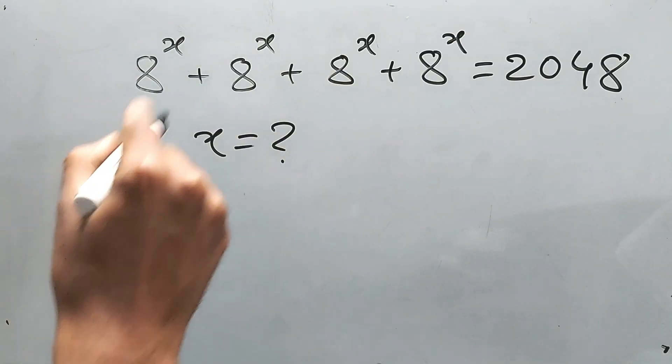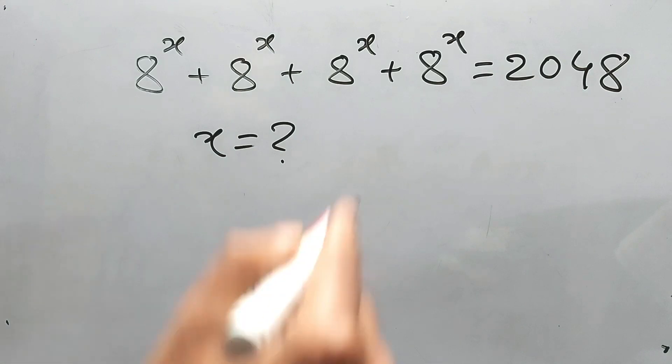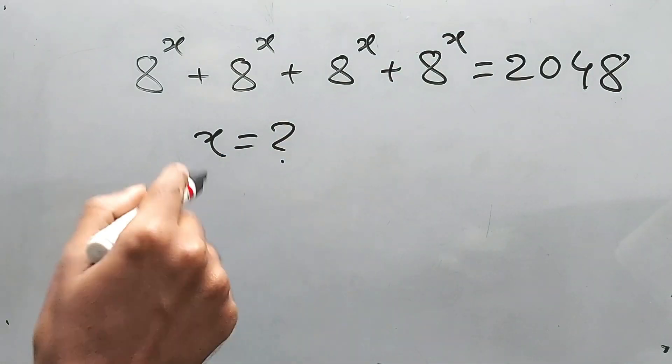So 8 to the power x plus 8 to the power x plus 8 to the power x plus 8 to the power x, four times, is equal to 2048. What is the value of x? Stop, stop, try it by yourself.